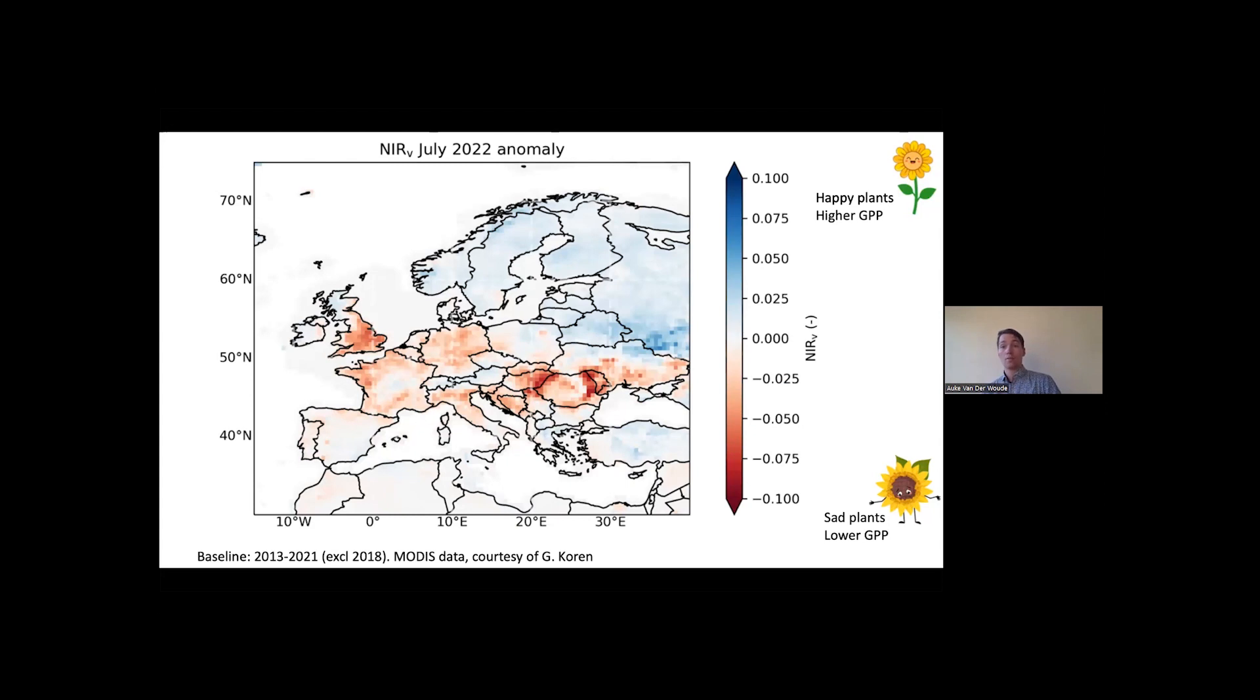On the other hand, in the central part of Europe, you see the red colors, which indicates lower NIR-V, going hand-in-hand with lower GPP, lower photosynthetic rates, and lower carbon uptake over Europe. What's quite nice to see here as well is that in Spain, in the very southwest of Europe, we don't see that strong of a NIR-V response. But there was a very strong drought response. And we think this is because the plants in Spain are already used to drought a bit more, and the crops there are harvested at different times than in the rest of Europe. So the biosphere is more adjusted already to drought.